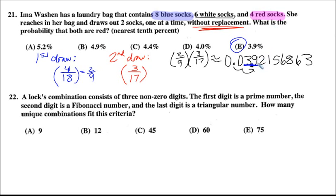Twenty-two is a heck of a problem. A lock's combination consists of three non-zero digits. The first digit is a prime number. The second digit is a Fibonacci number. And the last digit is a triangular number. How many unique combinations fit this criteria? When we're dealing with choices, we will have to end up multiplying out basically how many choices there are for each slot in this combination. So it says the first digit is a prime number. This is where you need to know all the different types of numbers. We know all of these are non-zero digits.